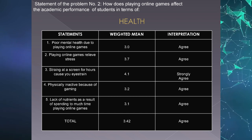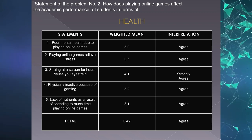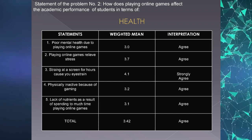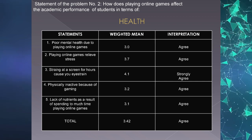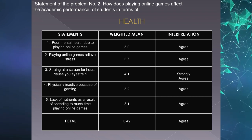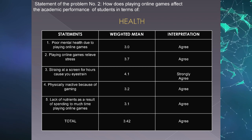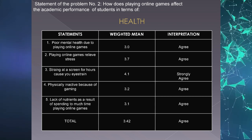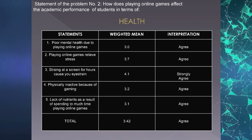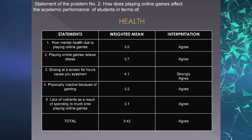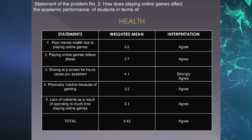Table 3 illustrates the overall weighted mean of all statements under health. Students strongly agree that staring at the screen for hours can cause eye strain, with a weighted mean of 4.1. With a weighted mean of 3.7, students agree that playing online games can be a stress reliever. With a weighted mean of 3.9, students agree that playing online games can affect their mental health. With a weighted mean of 3.2, students agree that playing online games can lead to physical inactivity. With a weighted mean of 3.1, students agree that spending all their time gaming can cause poor nutrition.